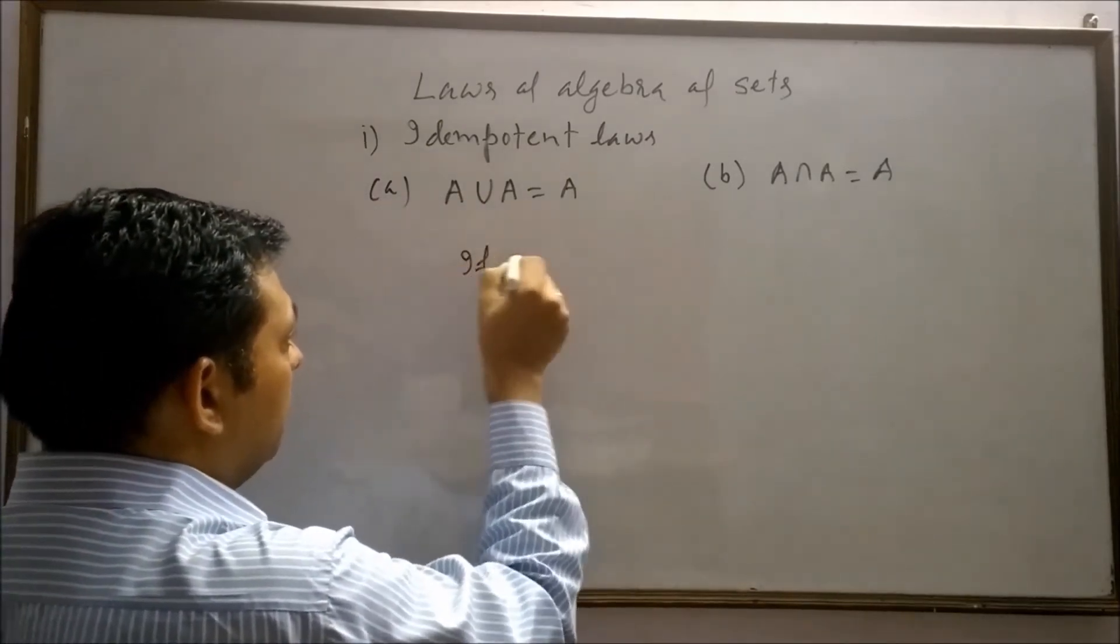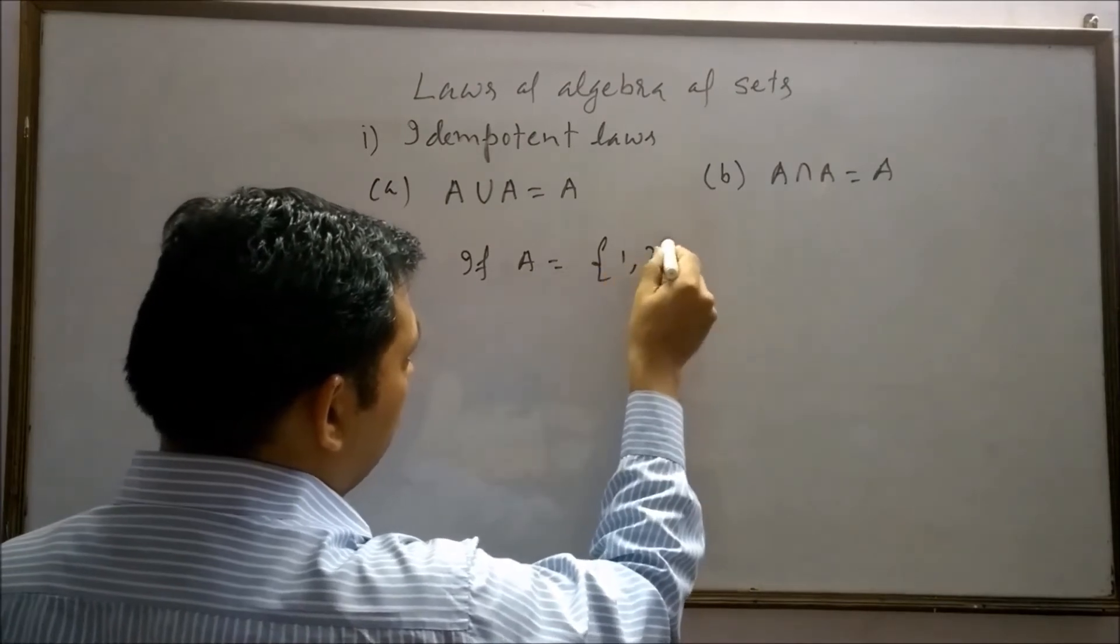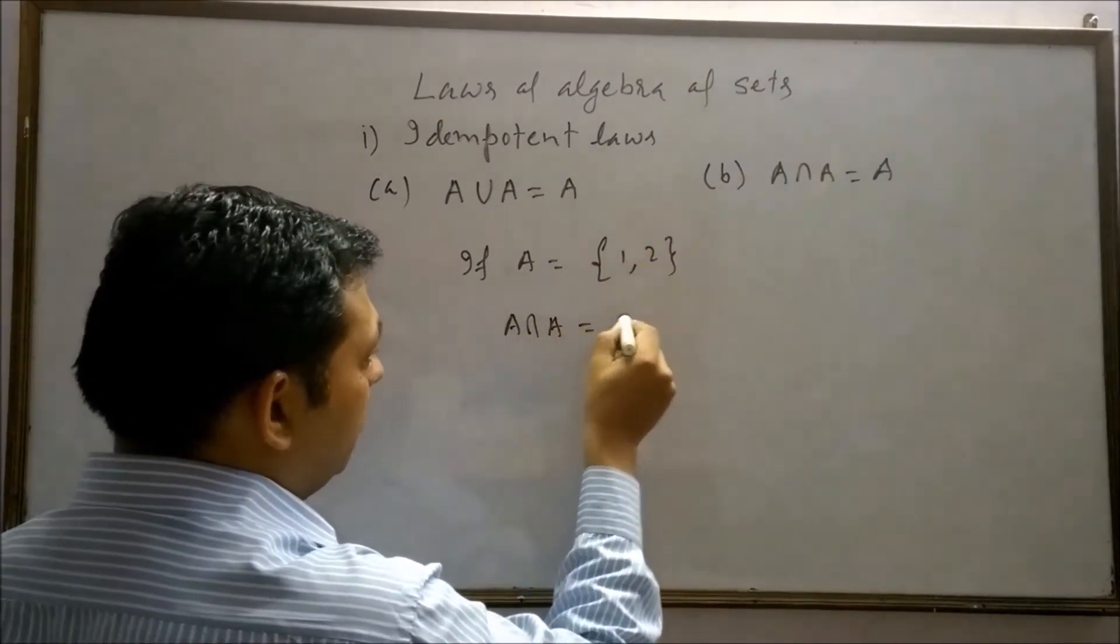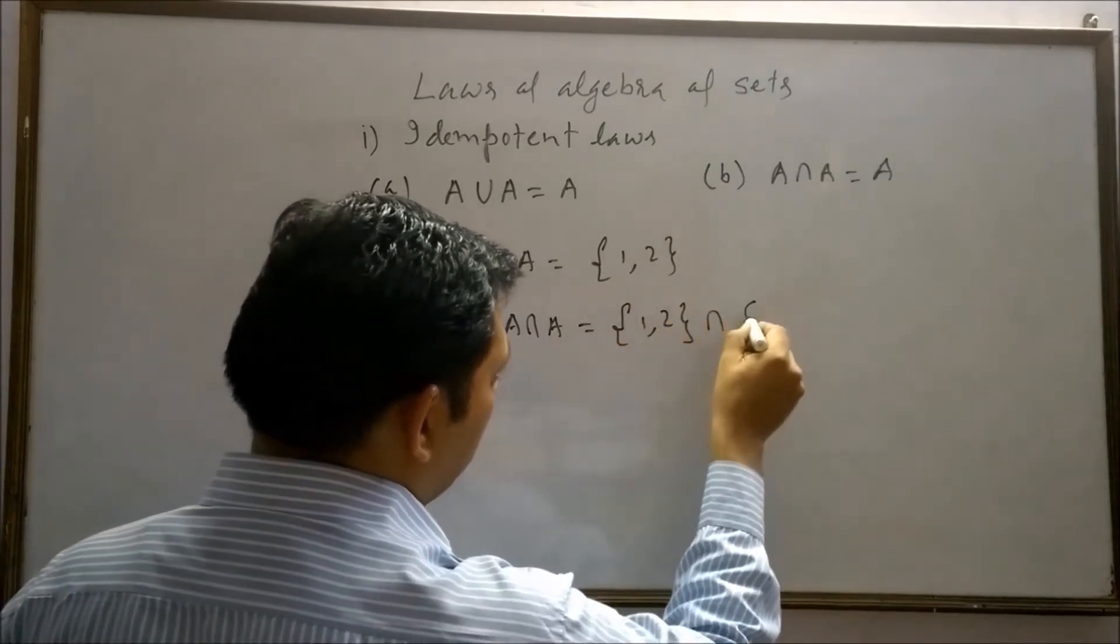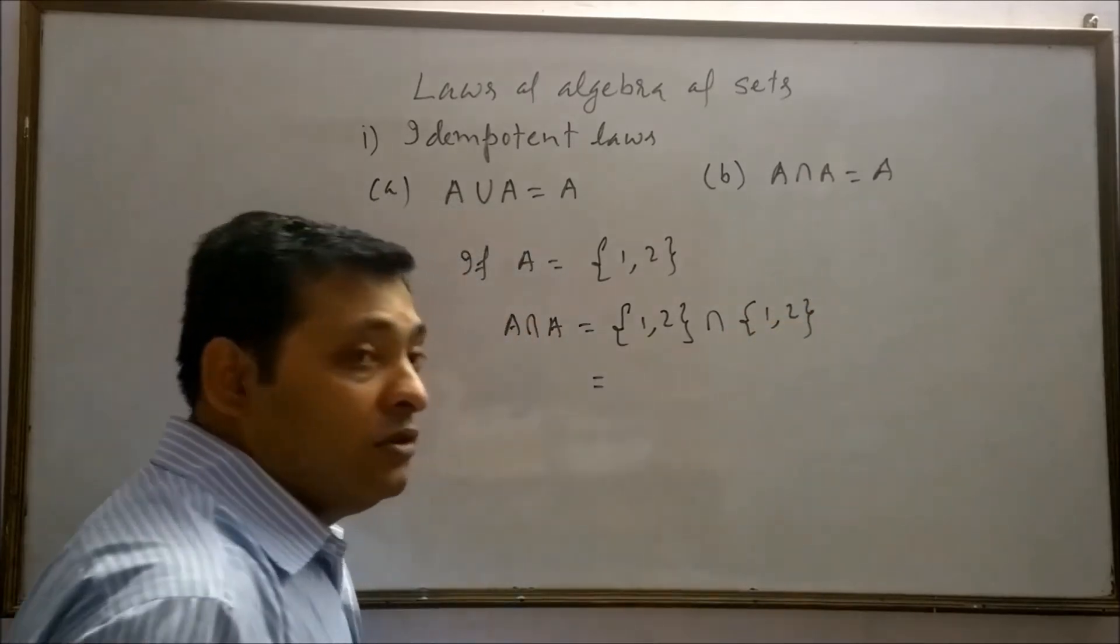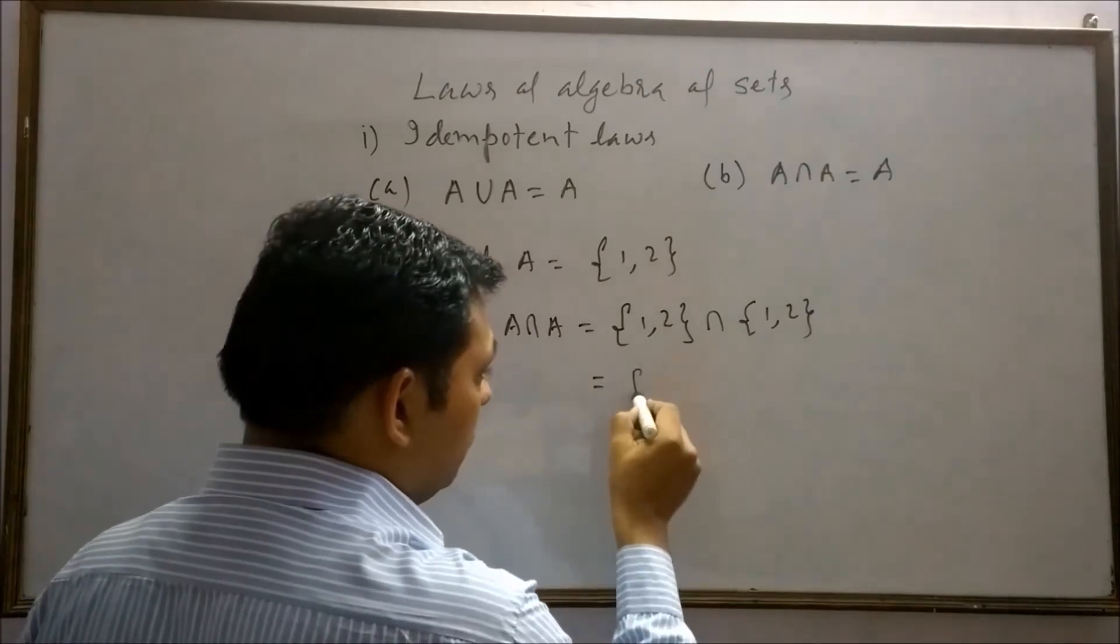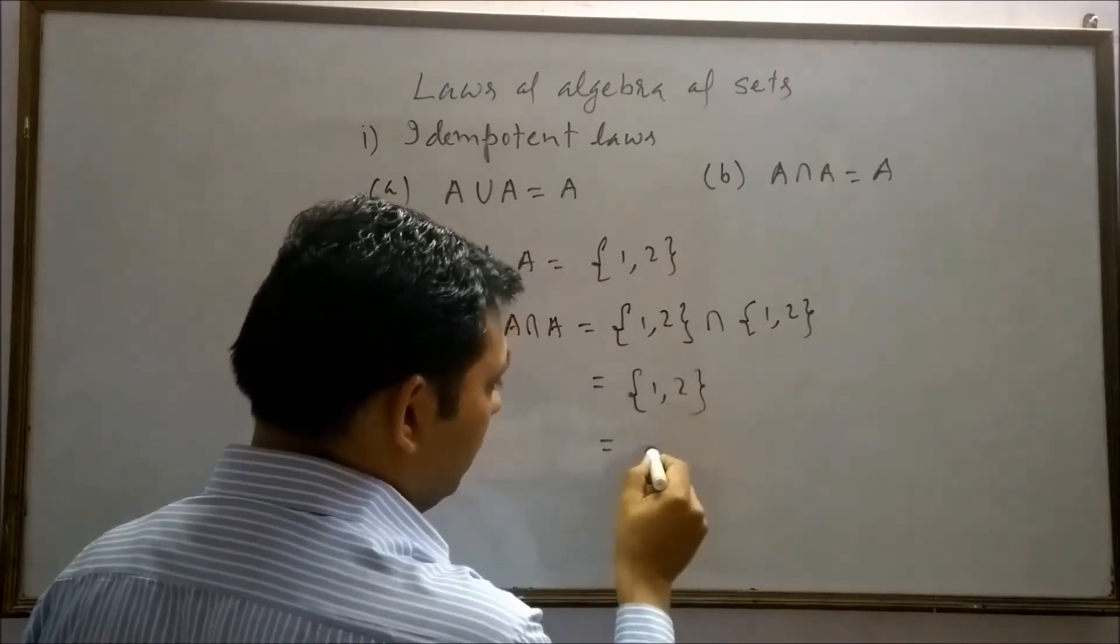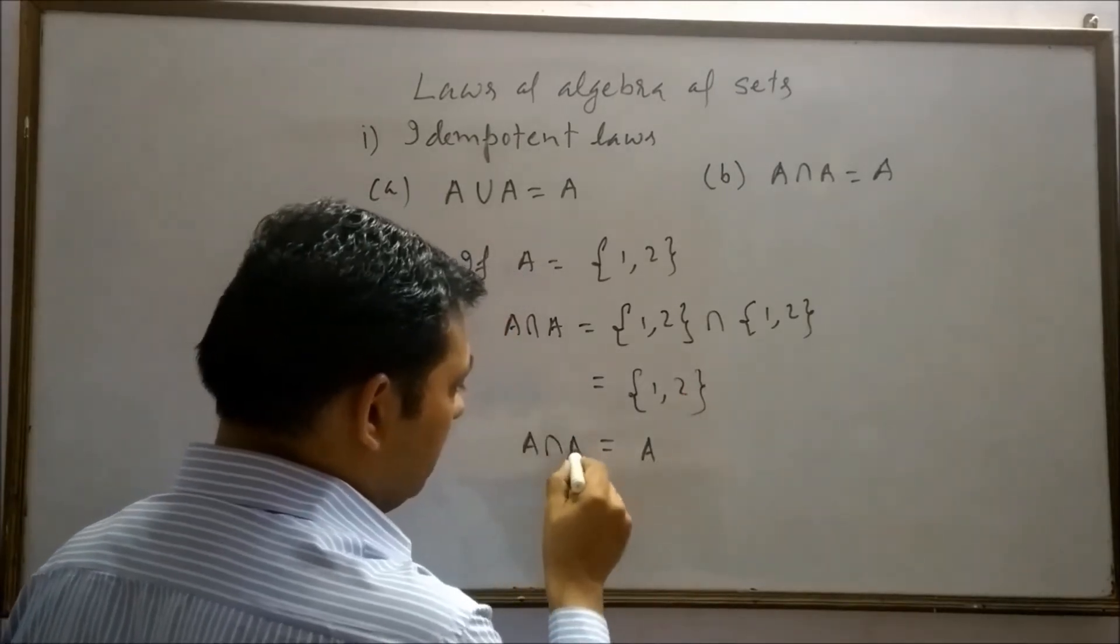Similarly, if A is {1, 2}, A intersection A will equal {1, 2} intersection {1, 2}. In intersection, we want common elements. Therefore, the common elements are 1 and 2. It means we get set A. A intersection A is set A.